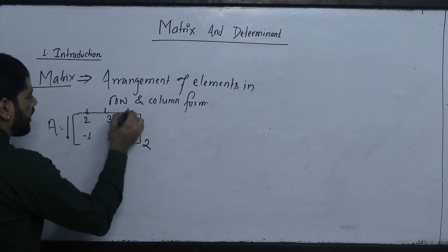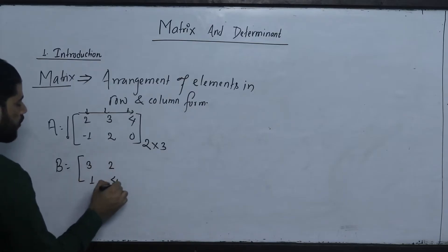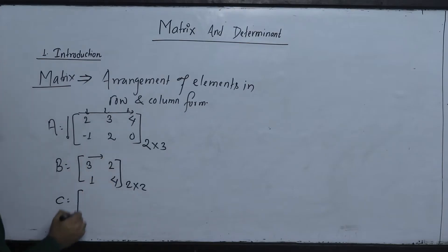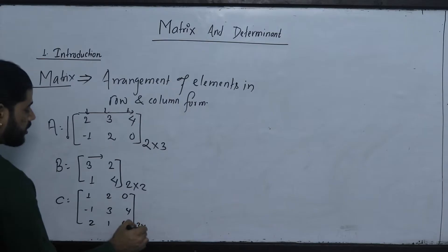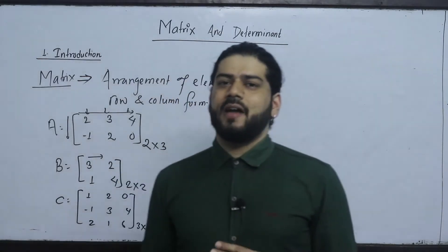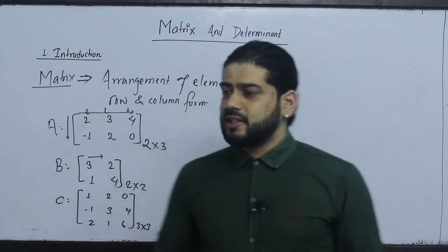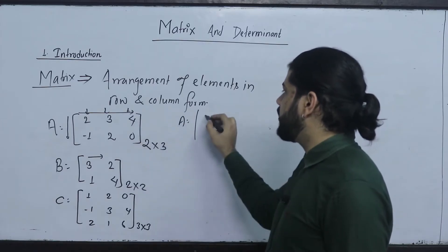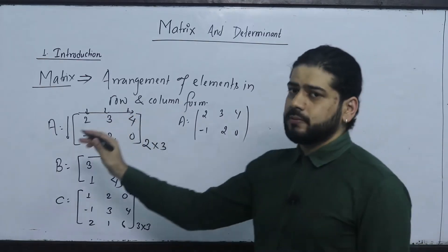Examples of matrices: a 2 by 3 matrix B, a 2 by 2 matrix C with elements 1, 2, 1, and a 3 by 3 matrix. Also 2 by 2, 2 by 3, 4 by 5, and 1 by 2 matrices. Matrix A has elements 2, 3, 0.